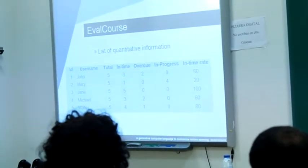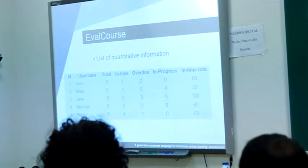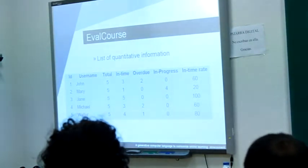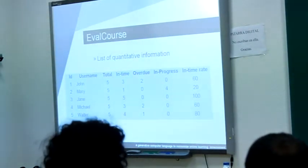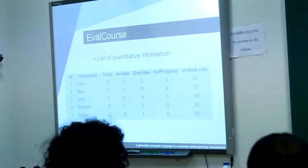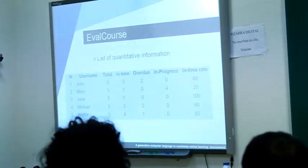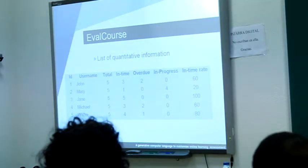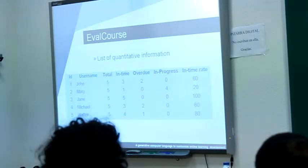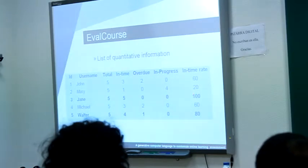In time indicates how many tasks were delivered in time. Overdue indicates how many tasks were delivered out of time. And in progress indicates how many tasks have yet to be delivered. Finally, in time rate, we have the percentage of in-time work delivered. For example, our indicator could be that those with at least 80% of activities delivered in time are going to have a positive rate in the competence of planning and time management. In this example, only Jane and Walter exceed this percentage.